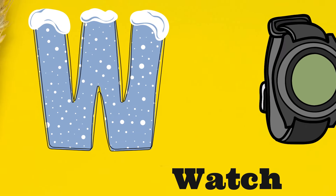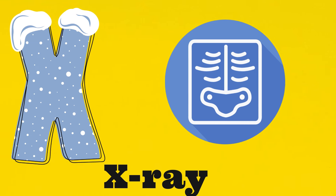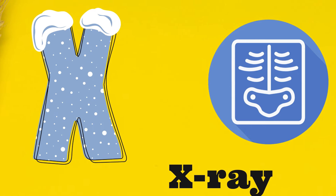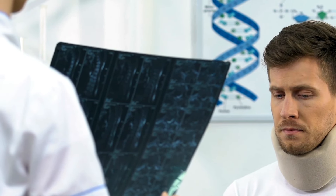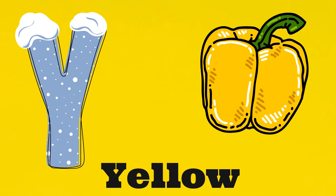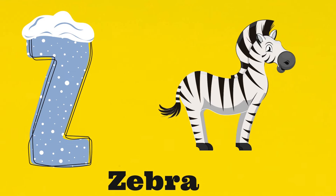W is for watch. X is for x-ray. X, x-ray, X, x-ray. Y is for yellow. Y, yellow, Y, yellow. Z is for zebra. Z, zebra, Z, zebra.